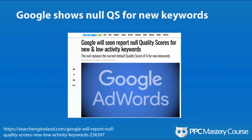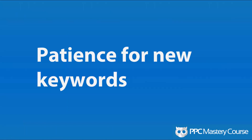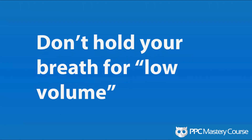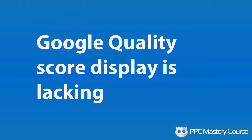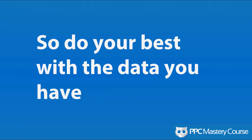Google told us we're going to get null quality scores for new and low-volume keywords. So you need patience for new keywords, but I wouldn't hold your breath for low-volume — and here's why: this is telling me that my highest-impression, most-clicked, highest-cost keyword in this account has low volume, even though keywords with much lower volume and no clicks at all are getting quality scores. Google's quality score display is lacking — I can say that definitively.